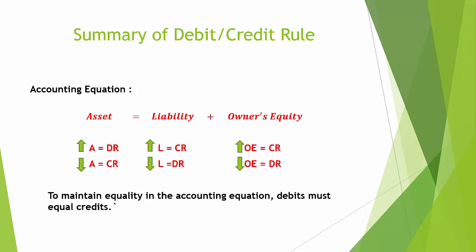Here's a summary of the debit credit rule. Notice that all assets increase with a debit, whereas liabilities and owner's equity, which are on the right-hand side of the accounting equation, increase with the opposite — a credit. Conversely, if an asset decreases, it's recorded with a credit. If liabilities and owner's equity decrease, they're recorded with a debit. To maintain equality in the accounting equation, debits must equal credits.